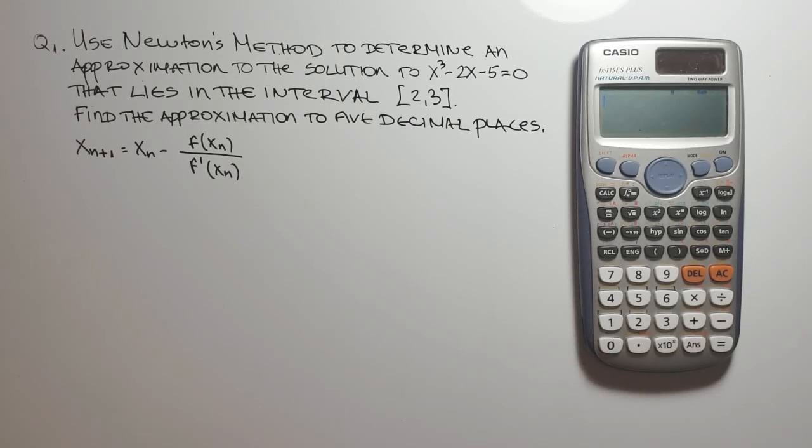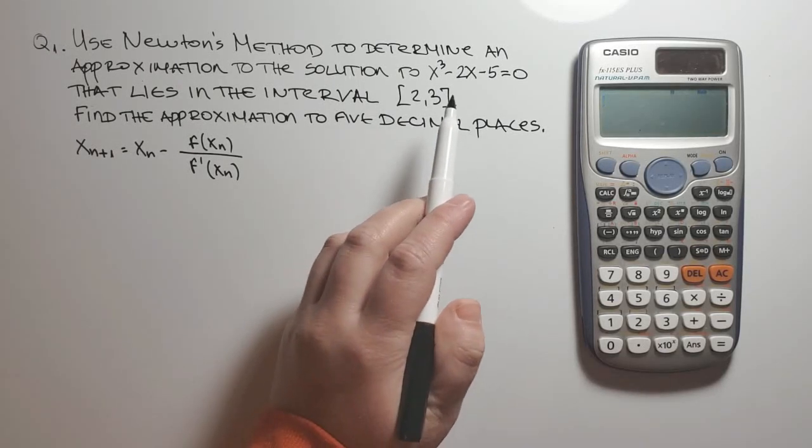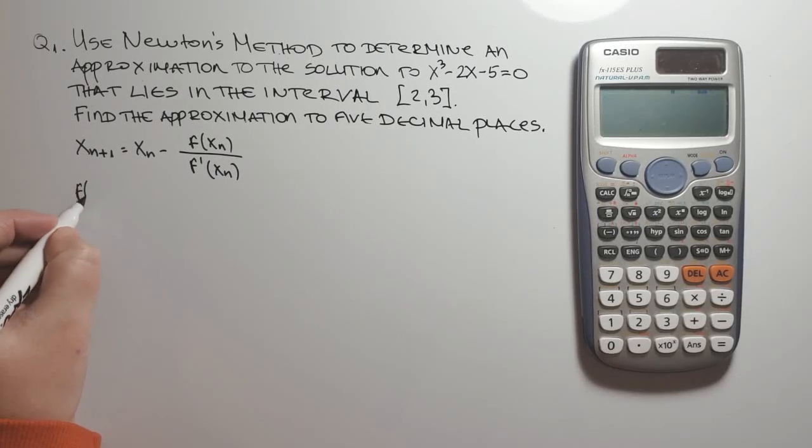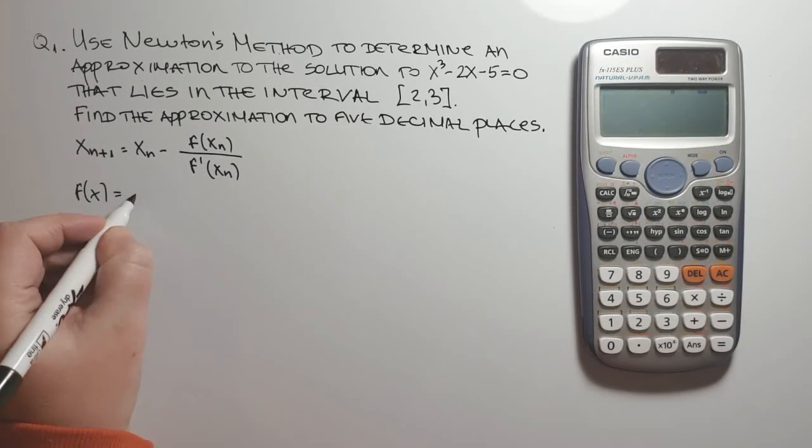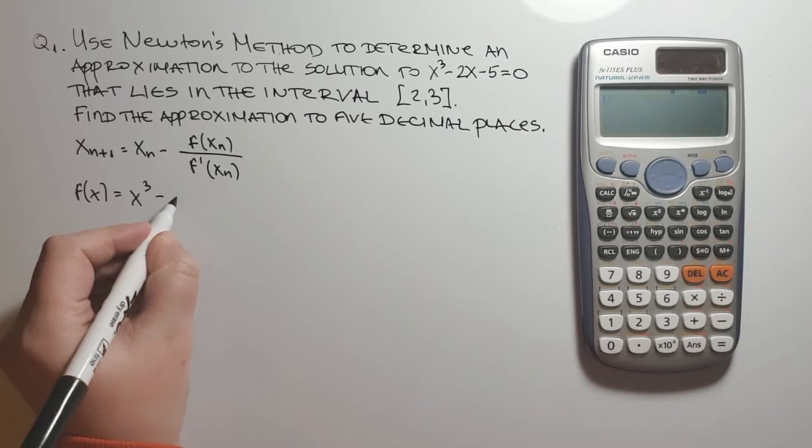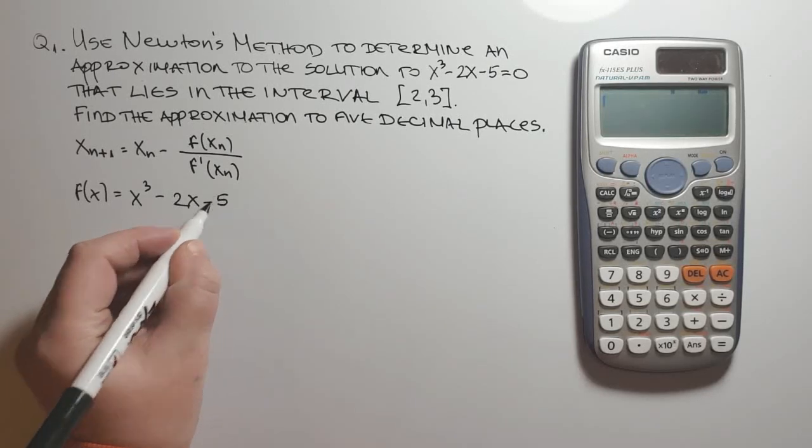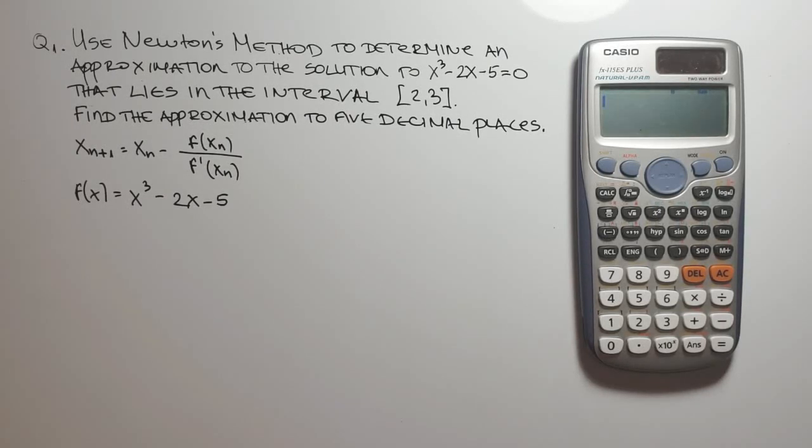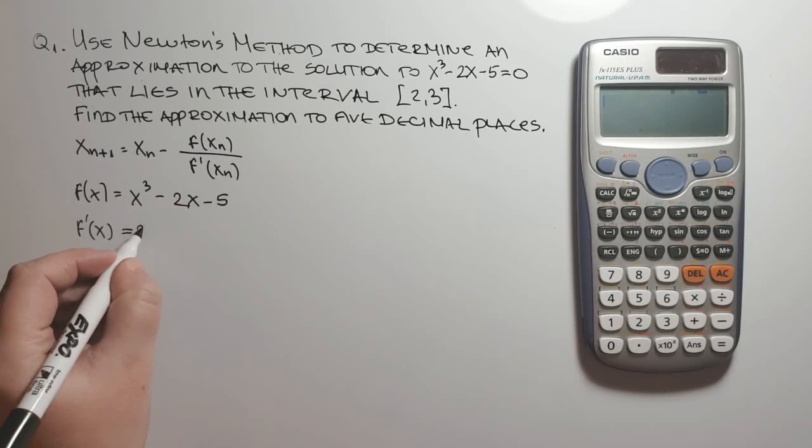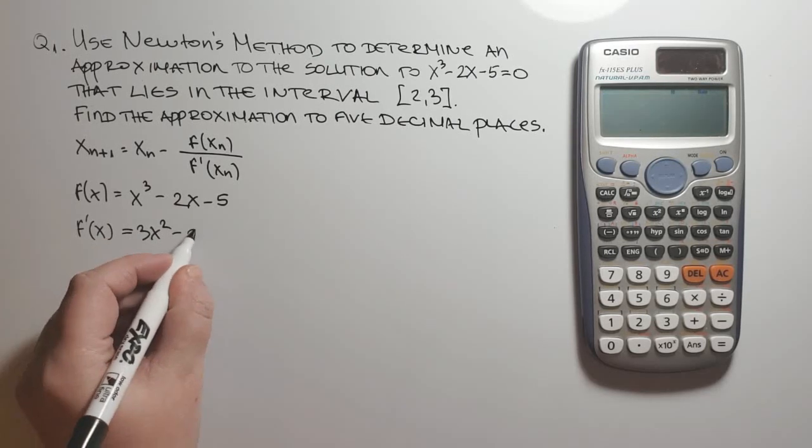Now let's go through our problem. We let our function be the following: f(x) equals x cubed minus 2x minus 5. From the general formula we can see that we need the first derivative of the function. So we have f prime of x equals 3x squared minus 2.